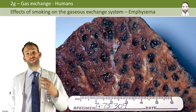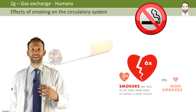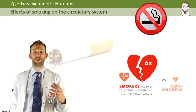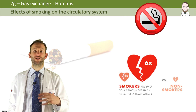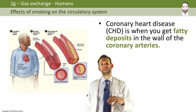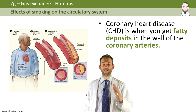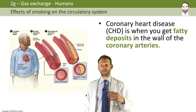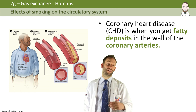What about the effects of smoke on the circulatory system? Smokers are actually six times more likely to suffer a heart attack than non-smokers, and that's for a few reasons. Let's look in detail at coronary heart disease. This is where you get loads of fatty deposits in your coronary arteries — the ones that supply the heart itself. These fatty deposits can block blood flow to the heart, a clot can completely block off the artery, and then the heart will be starved of oxygen, causing a heart attack.